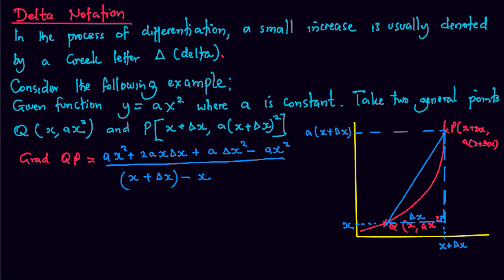This gives us 2Ax delta x plus A delta x squared minus Ax squared divided by delta x.